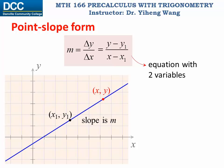Please be reminded that this is an equation with two variables, since m, x1, and y1 are all known coefficients. This can be rewritten as this, and again, only x and y are variables.